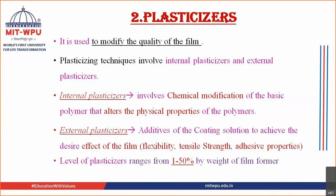In internal plasticizing, we modify the basic polymer such that the physical property of the polymer is modified and it becomes flexible — there is some chemistry involved whereby the polymer is changed into a plasticized kind of polymer. So it is a chemical modification.